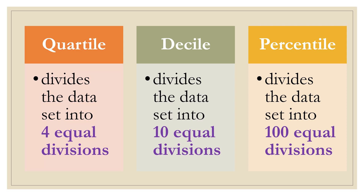There are three measures of relative position. These are the quartile, the decile, and the percentile. The quartile divides the data set into four equal divisions. The decile, on the other hand, divides the data set into ten equal divisions. And the percentile divides the data set into one hundred equal divisions.